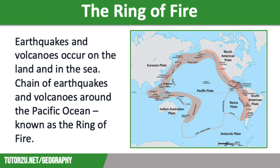You can find earthquakes and volcanoes on the land and in the sea. For example, there is a chain of earthquakes and volcanoes that runs down the west coast of North and South America, along the margin of the North American plate and the Pacific plate, and the South American plate and the Nazca plate. There is also a long line of earthquakes and volcanoes along the margin between the Pacific plate, the Eurasian plate, and the Philippines plate. Both of these form part of the Ring of Fire which circles the Pacific Ocean, as you can see on the screen.